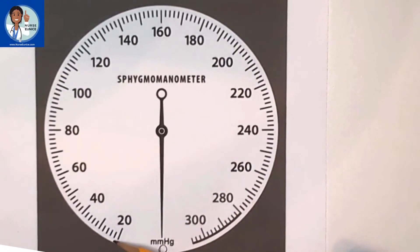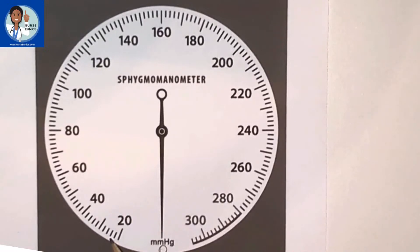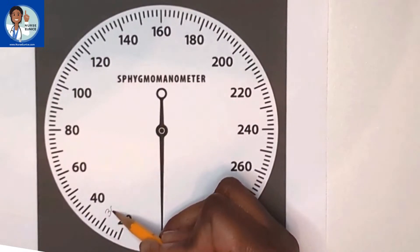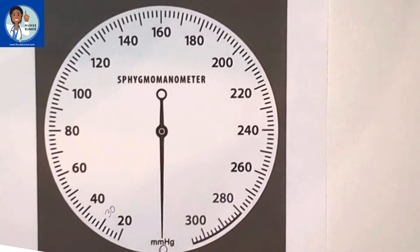Here we go: 20, small line above would be 22, two small lines above 20 is 24, 26, 28, long line with no number would be 30. Let's keep it going: 32, 34, 36, 38, 40.